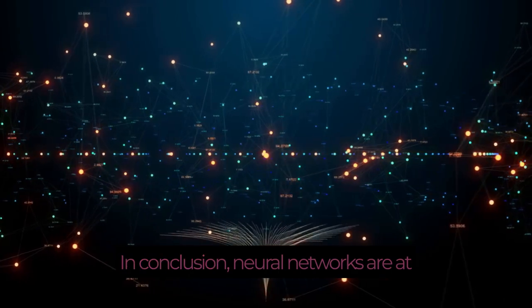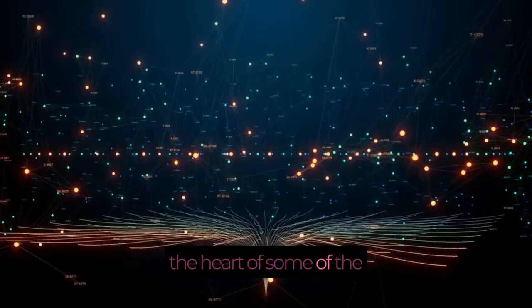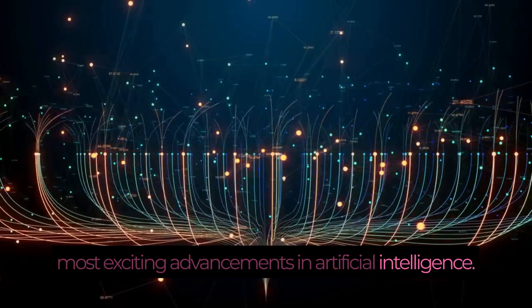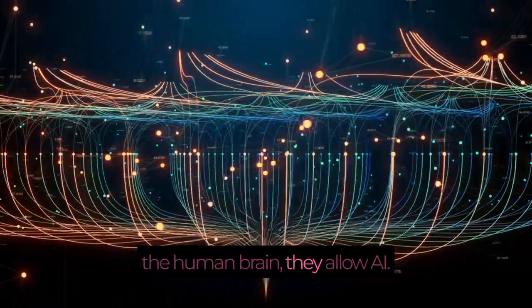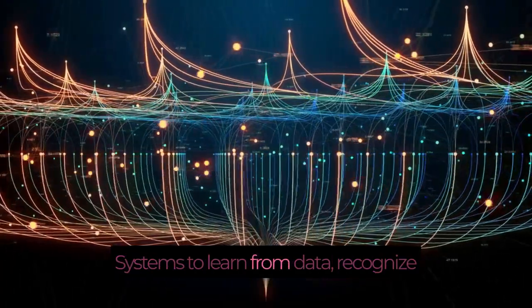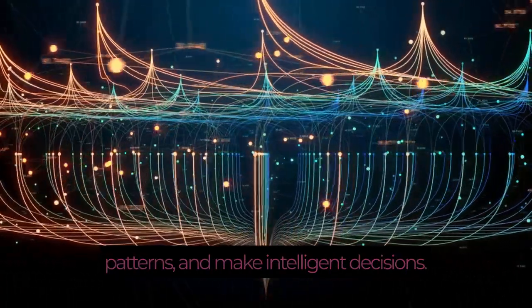In conclusion, neural networks are at the heart of some of the most exciting advancements in artificial intelligence. By mimicking the structure and function of the human brain, they allow AI systems to learn from data, recognize patterns, and make intelligent decisions.